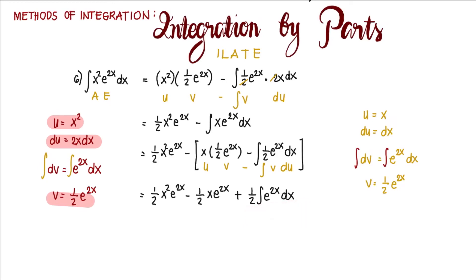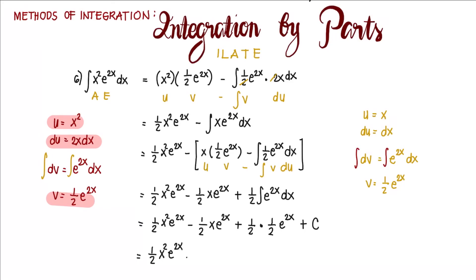Integrating, we get one half x squared e to the power of 2x minus one half x e to the power of 2x, plus one half times one half times one half e to the power of 2x plus C. Simplifying, the final answer is one half x squared e to the power of 2x minus one half x e to the power of 2x plus one over four e to the power of 2x plus C. This was the case of a product between an algebraic and an exponential function; we will solve another case in the next video.